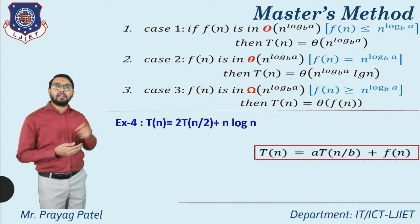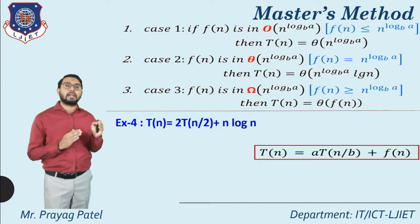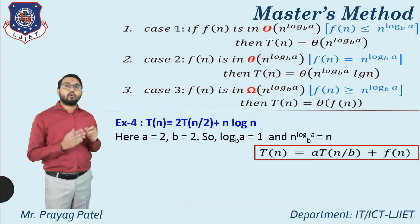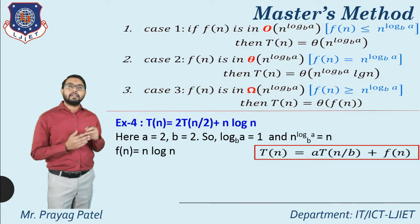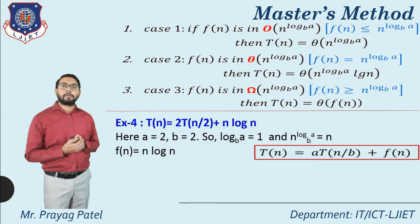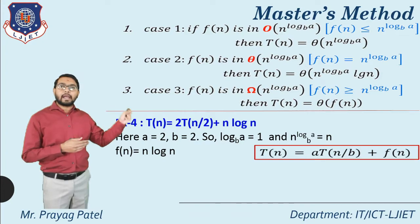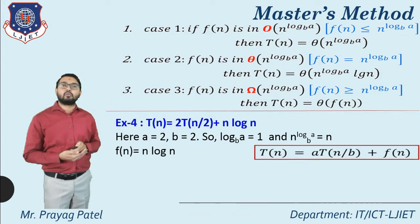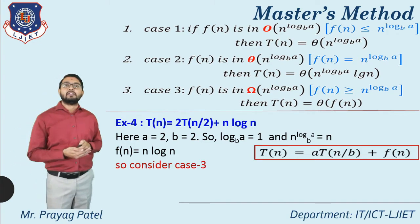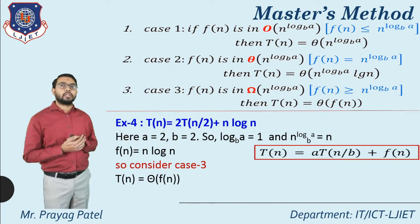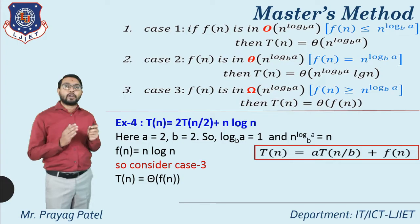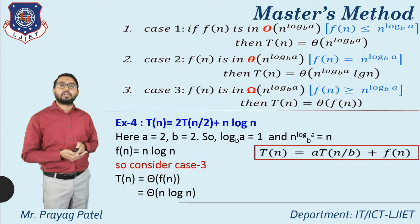Variation example 4: T(n) = 2T(n/2) + n log n. Here a = 2, b = 2. log a base b = log 2 base 2 = 1. So n^(log a base b) = n. f(n) = n log n. Since f(n) = n log n ≥ n = n^(log a base b), case 3 applies: T(n) = Θ(f(n)) = Θ(n log n).